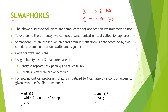Now, how semaphores are implemented and used: they use just two functions — one is the wait function and the other one is the signal function. Both functions operate on one integer type known as the semaphore variable, referred to as s.